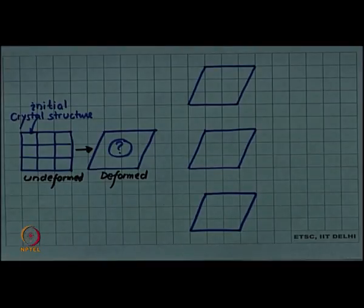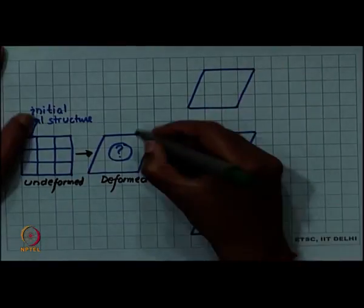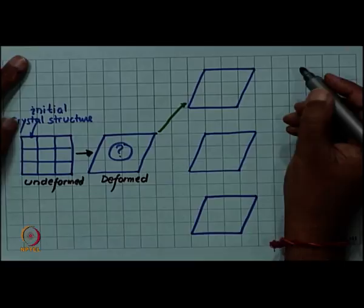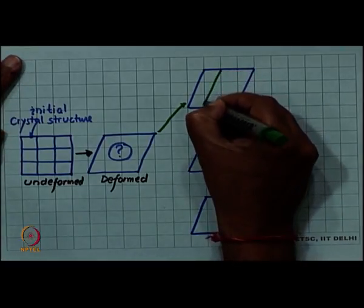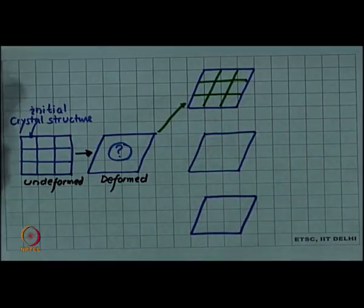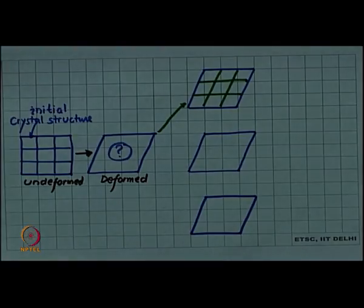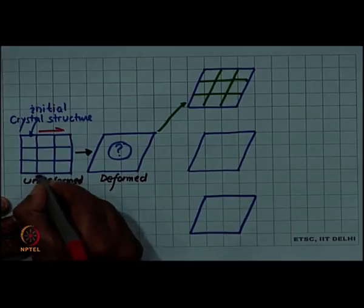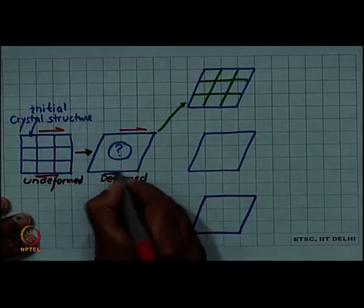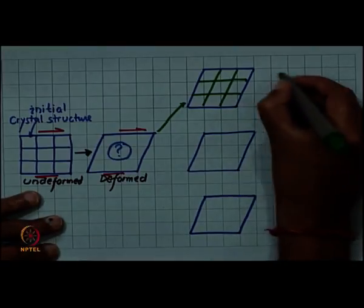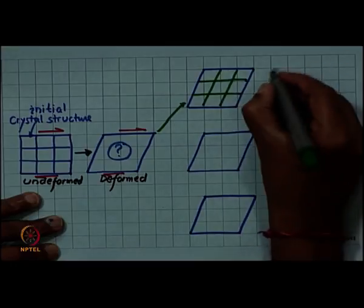We can take several stands or several views about it. One view could be that as the material is deforming, the crystal structure also changes according to the deformation. This is quite natural to assume. I think that the deformation has changed the crystal structure. Notice that in this case I am considering a very simple kind of deformation, which is a shear kind of deformation of the material. One option can be the crystal structure changes due to deformation.